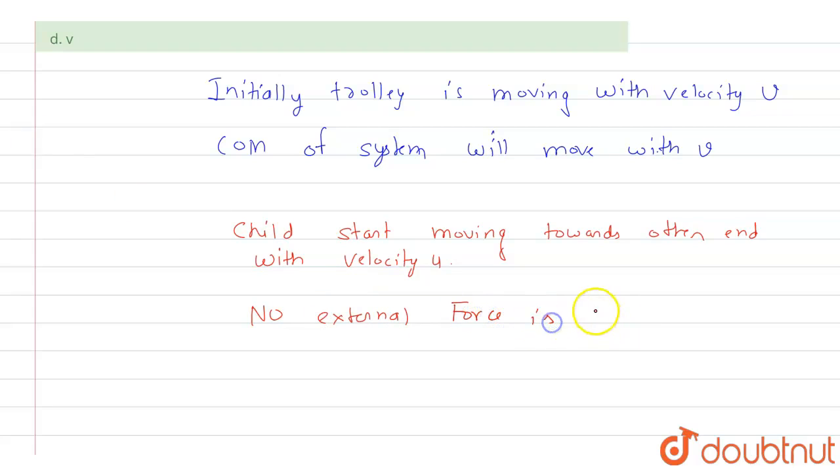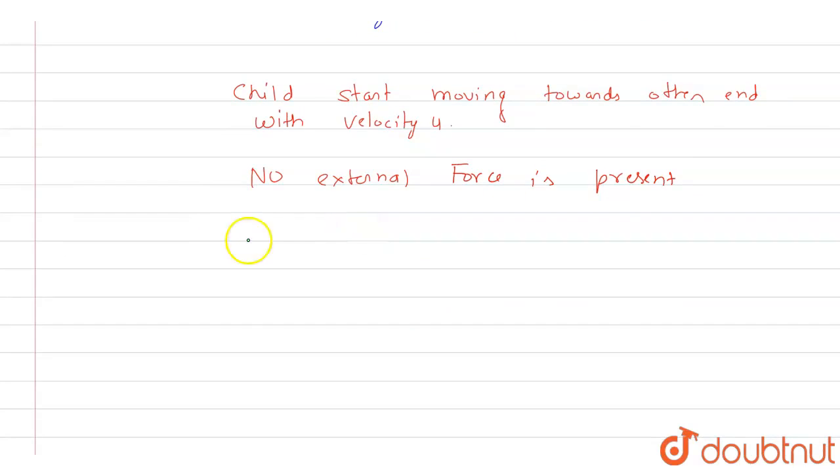In the absence of external force, the center of mass will travel with the same speed as it was initially traveling. So that means the center of mass will travel with the velocity v again, even with the child moving towards the other end. No external force is present and due to this...